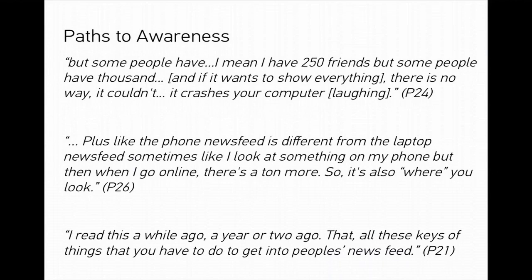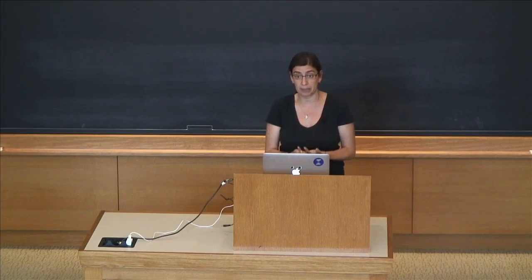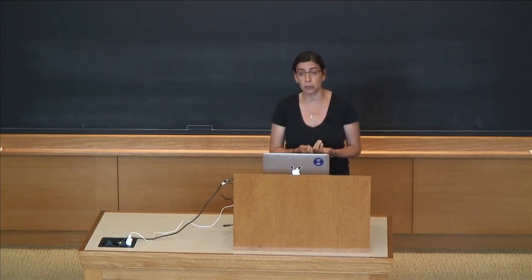Some people reasoned that if you have 250 friends but some people have 1,000, there's no way the computer could show you everything. They also noticed that the phone newsfeed is different from the laptop newsfeed. Essentially, comments focused in three different areas: people felt things were filtered out of necessity — if you have 2,000 friends, you just can't show everything. Second, comparisons — sometimes people look at timelines and the newsfeed and see discrepancies, or compare phone and computer platforms. Third, they found out through blogs.